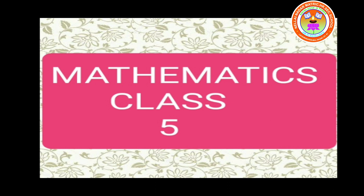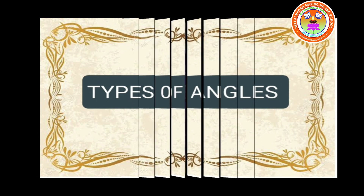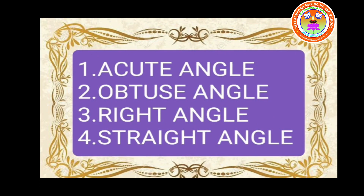So, in last session you learned about angles formed by the meeting of two rays, angles formed by the intersection of two rays. Now, today in this session we are going to learn about types of angles. First one: acute angle. Second one: obtuse angle. Third one: right angle. And the last one, fourth one: straight angle. About these four angles, we are going to learn in detail.